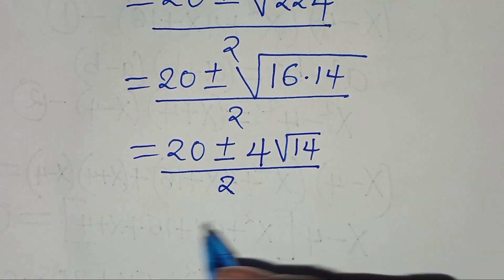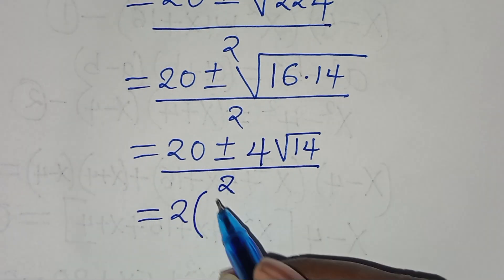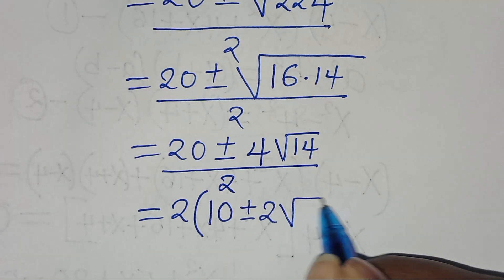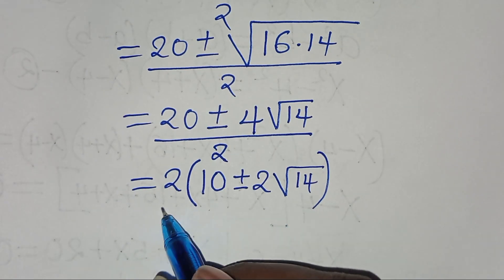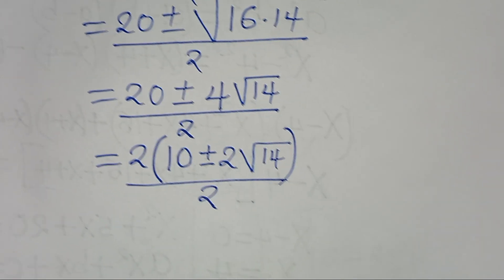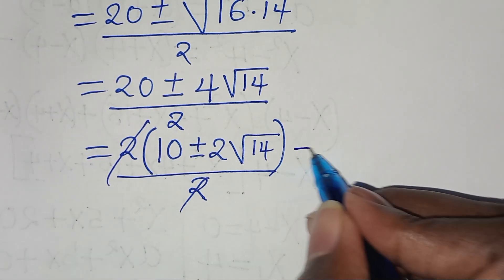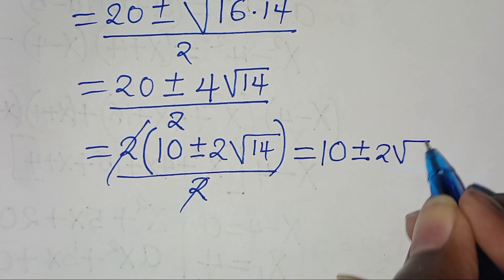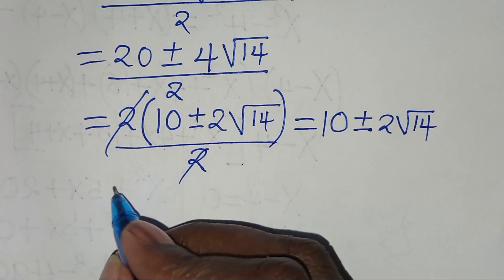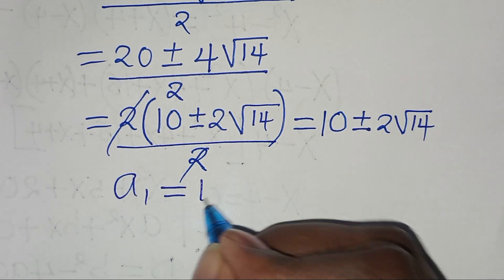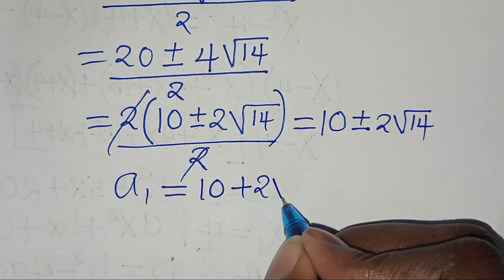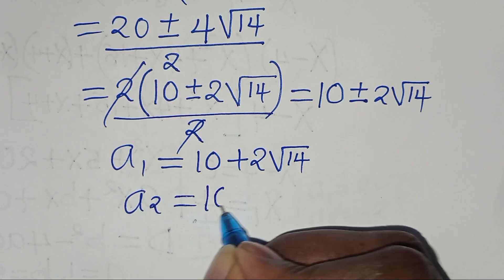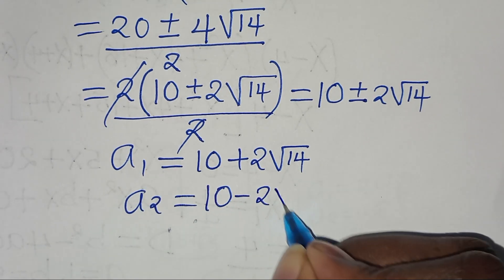So we have that 2 is common here. We can factor out 2, so that in the parentheses we have 10 plus or minus 2 times the square root of 14, everything divided by 2. Simplifying the 2, this implies that we have 10 plus or minus 2 square root of 14. So we have two values of A: A1 is equal to 10 plus 2 square root of 14, and A2 is equal to 10 minus 2 square root of 14.